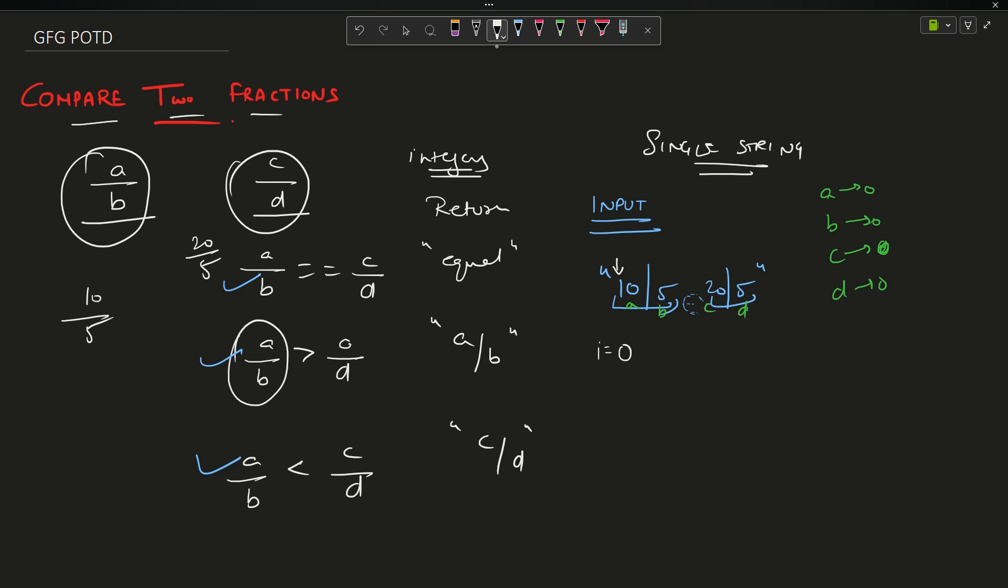From i equals 0, I will start up till I encounter this oblique. So while s of i is not equals to this character, you will just do a equals a multiplied by 10 plus s of i minus 0, and i plus plus. This loop will land your i on the oblique and you will have your a as 10. After that, you will have to surpass this oblique, so just write i plus plus, i will come here for 5.